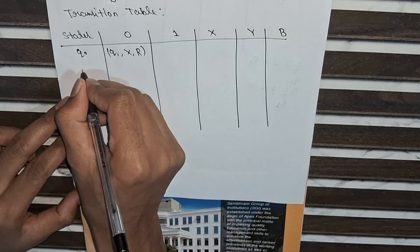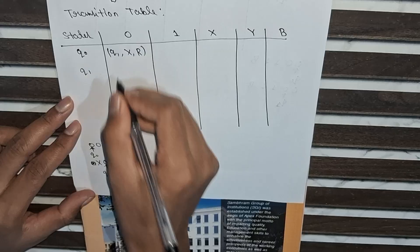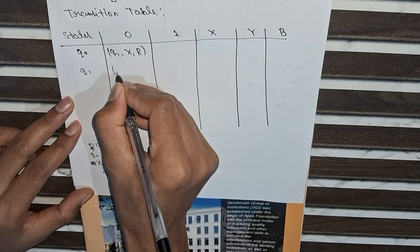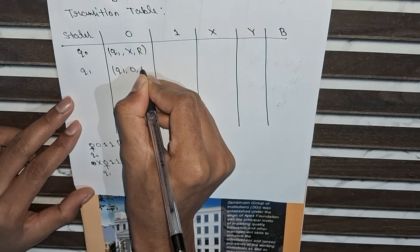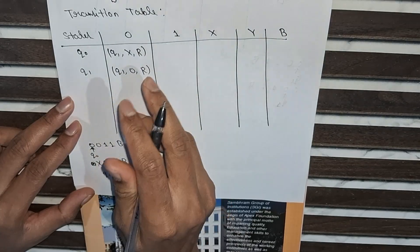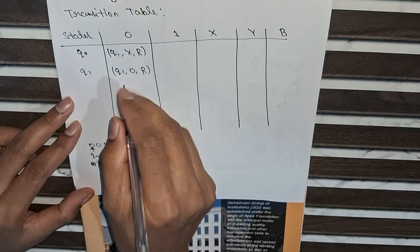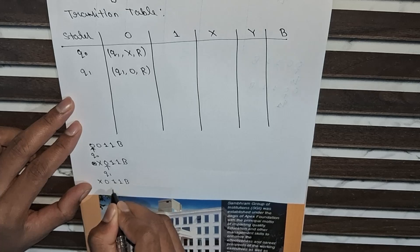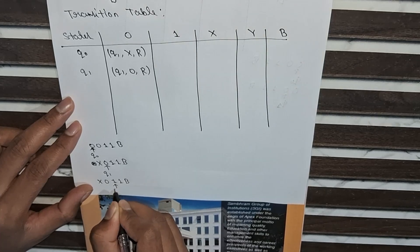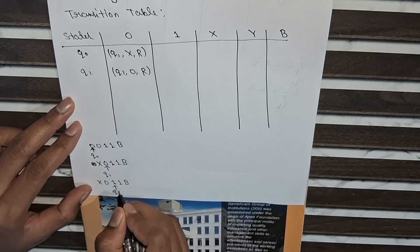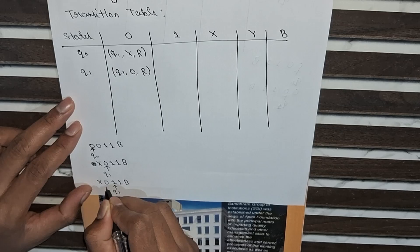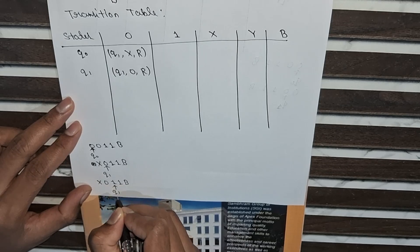I will introduce state q1. At q1 with input symbol 0, define a function: stay in q1, keep 0, and move towards right to find a 1 to mark as Y. Now the read-write head is on 1 with state q1. Since I encountered a 1, I make this 1 to Y, move towards left to find another 0, and change state from q1 to q2.